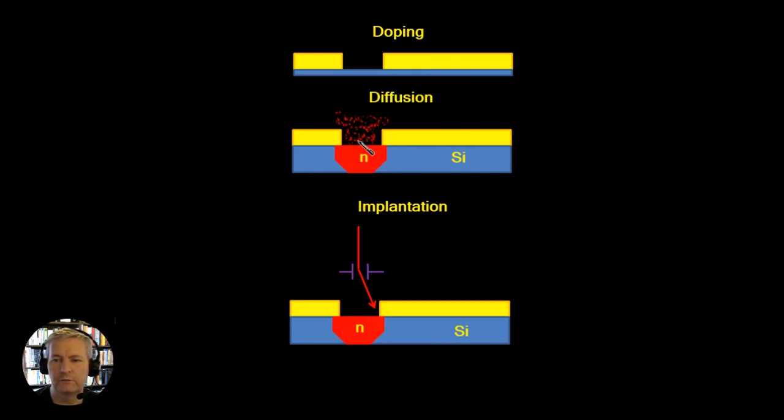In diffusion we have a gaseous material which diffuses into the region. In implantation we have ions which fire down through and are directed onto particular areas within this window or active region.